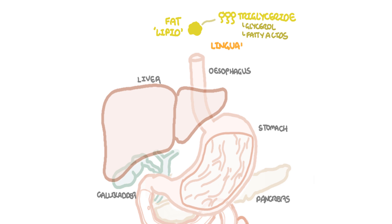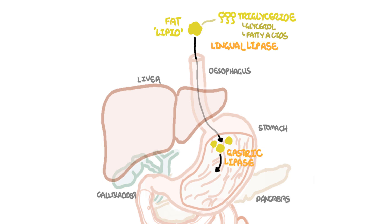Fat breakdown begins in the mouth with lingual lipase and mastication. Lipase hydrolyzes and breaks down lipids — the fats. The partially digested lipids travel to the stomach to be further processed by gastric lipase. The broken down lipids, still in triglyceride chunks, move into the duodenum, bringing with it the acidity from the stomach.